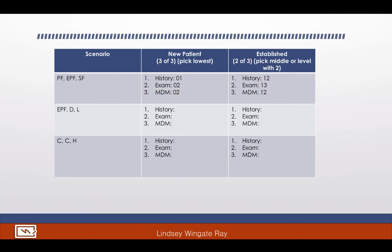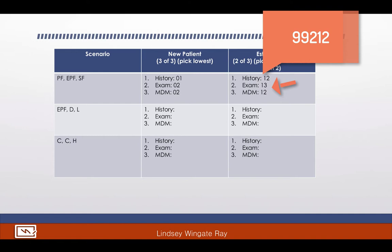Now for the established patient column with the same scenario: history is problem-focused, so that's 99212. The exam is expanded problem-focused, so 99213. Straightforward medical decision making is a 99212. We have two 99212s, so since established requires two of the three, we go with the code that appears twice — 99212.